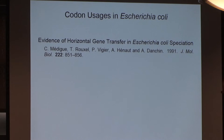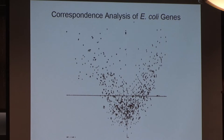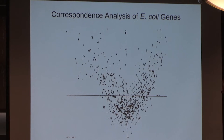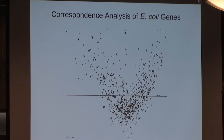This current foray into codon usage started as a result of having a figure from a paper shown at a meeting. Paul Sharp showed this figure at a very early genome meeting. This is plotting the E. coli genes by their codon usage — the frequency of UUU, UUC, UUA, UUG, and so on.